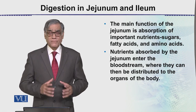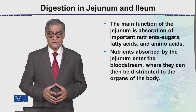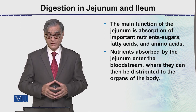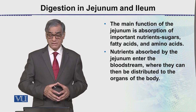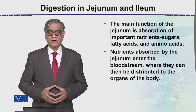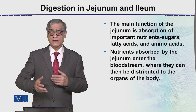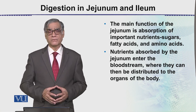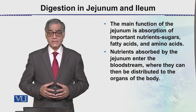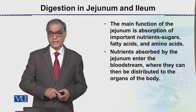The main function of the jejunum is absorption — specifically the absorption of important nutrients: sugars, fatty acids, and amino acids. The food from the duodenum is not completely digested; here in the jejunum, digestion and absorption both occur. Nutrients absorbed by the jejunum enter the bloodstream.